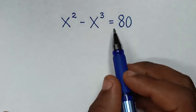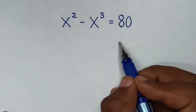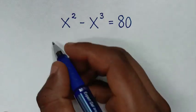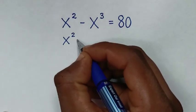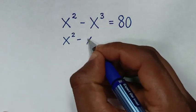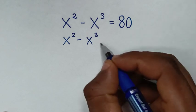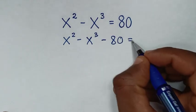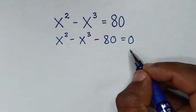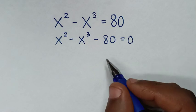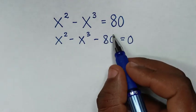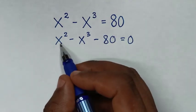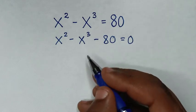In the first step we will take this 80 into the left side. So it will be x squared minus x cubed, 80 we take to this side will be minus 80 is equal to 0. Then we will split this 80 according to these corresponding exponents x squared and x cubed.